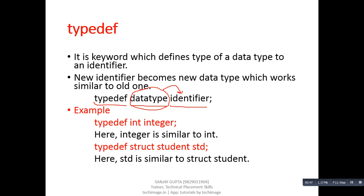With the help of this example we can understand it. typedef is the keyword, int is the data type, and we are trying to assign all the properties of the int data type to an identifier which is integer. So here, integer is similar to int. The benefit of typedef is that if we want to create new names for previous data types, we can use typedef, which stands for type definition.